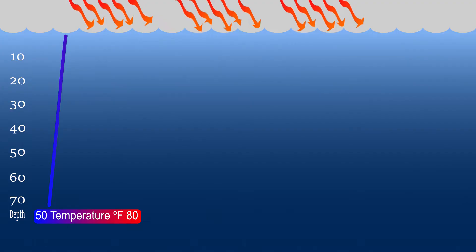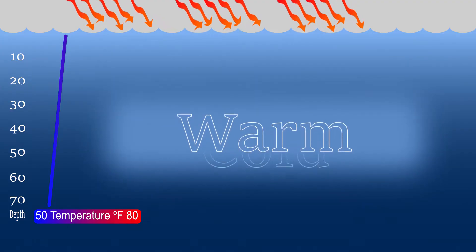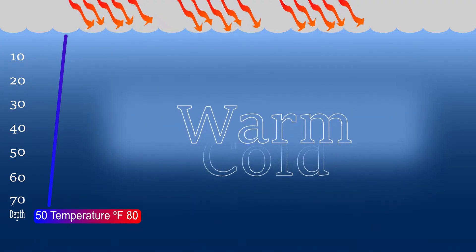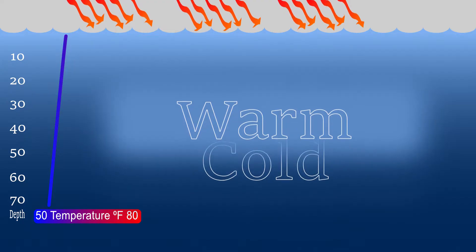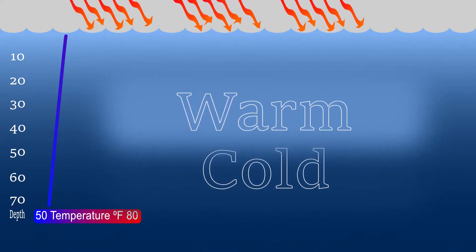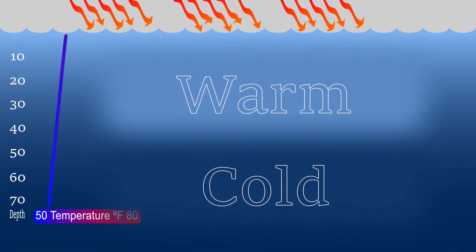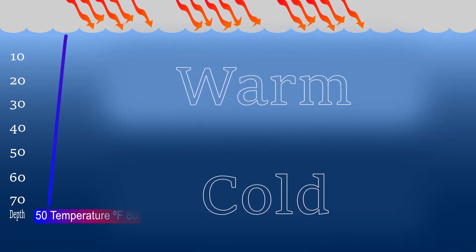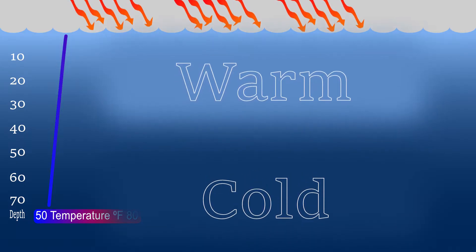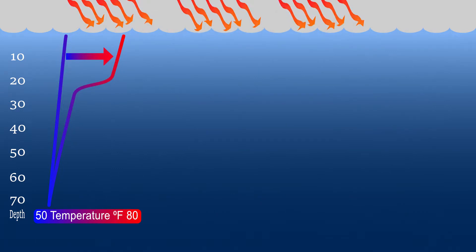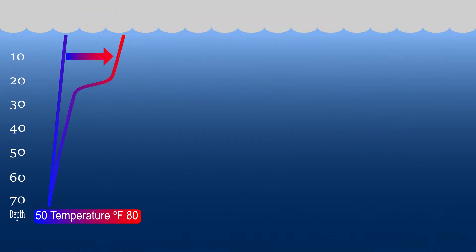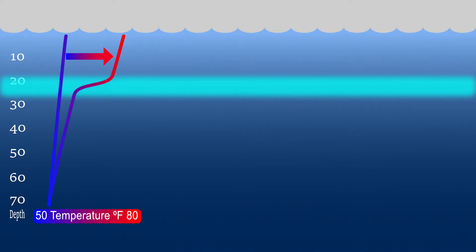However, as the surface water warms in the spring and early summer, it becomes less dense than the colder deeper water in the lake. Cold water is more dense than warm water, and less dense water will float on more dense water. These differences in water temperature initiate thermal stratification — the separation of water based on temperature.